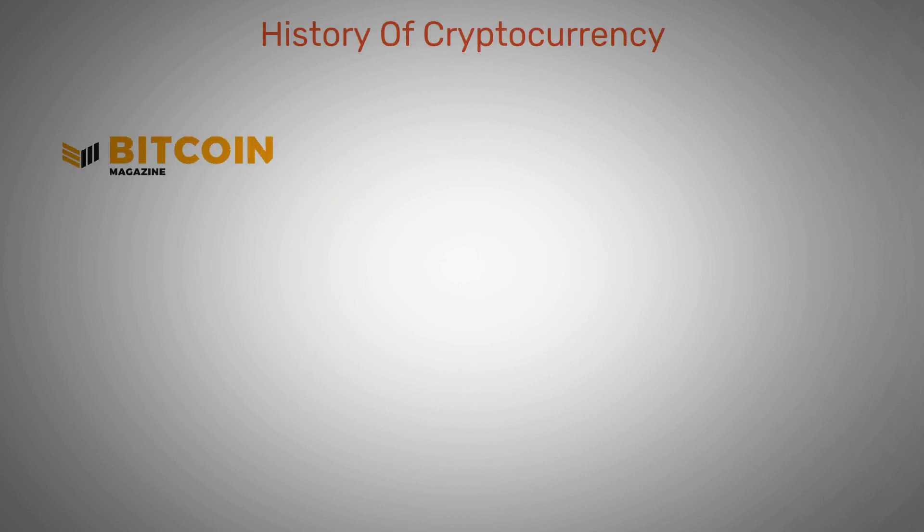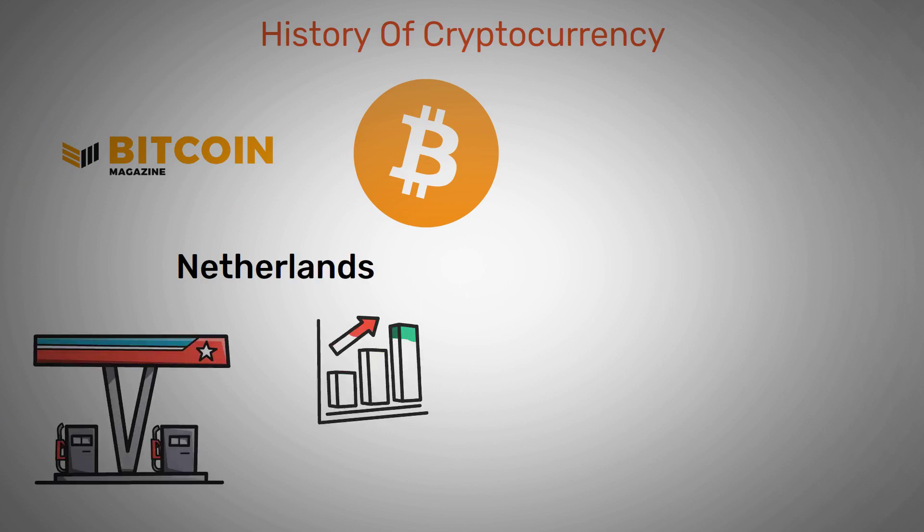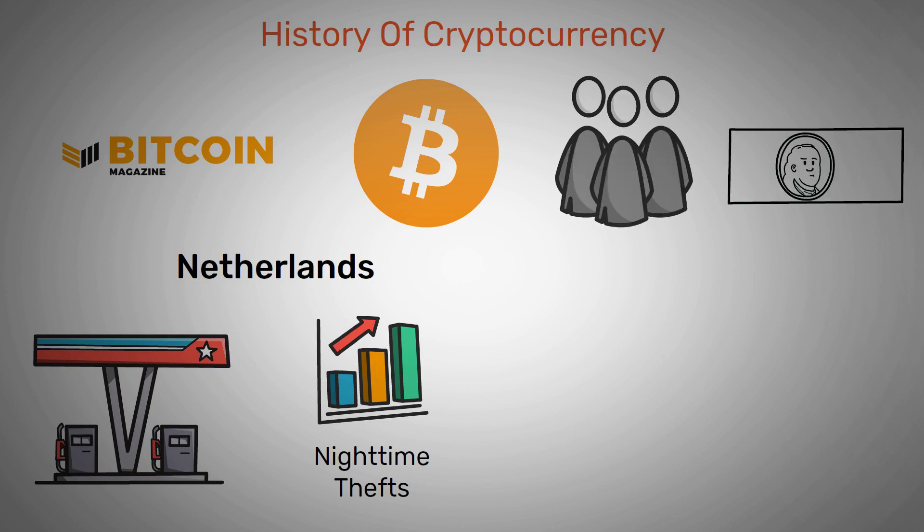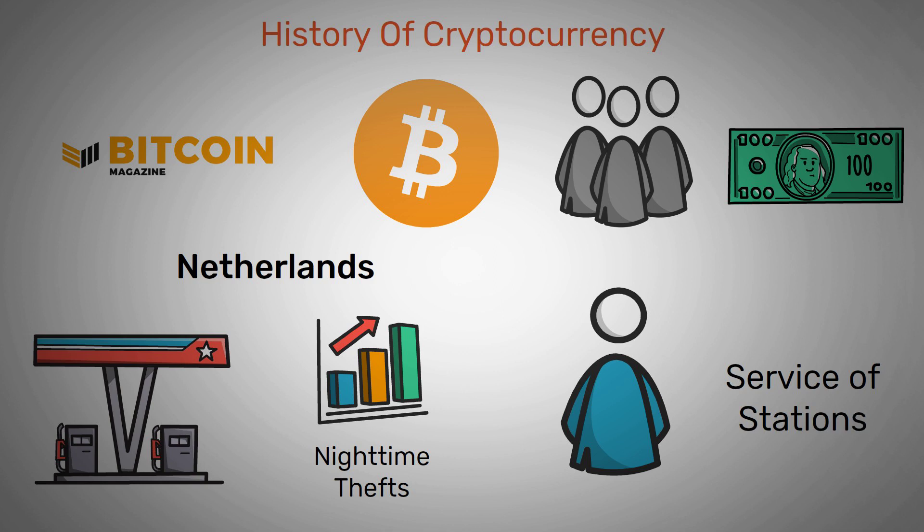According to Bitcoin Magazine, the earliest attempt at cryptocurrency was in the Netherlands. Petrol stations in the country were suffering from increasing nighttime thefts. To curb the rise, a group of developers came together to attempt to link money to newly designed smart cards. Truck drivers who needed the service of these stations would carry these cards and the stations would not have paper money lying around.